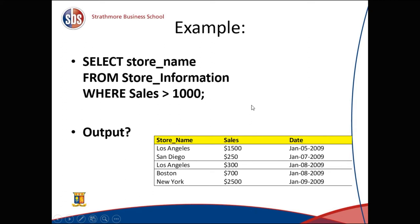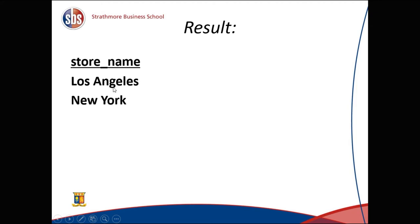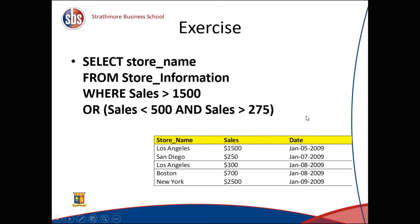For example: SELECT store_name FROM store_information WHERE sales > 1000. Los Angeles has 1500 — greater than 1000, so it is displayed. 250 is not greater than 1000, so San Diego is not displayed. Boston's 300 is also not greater than 1000. New York has 2500 — greater than 1000, so it is displayed. The output would be only two stores: Los Angeles and New York.